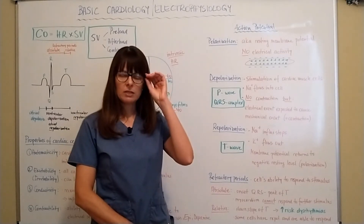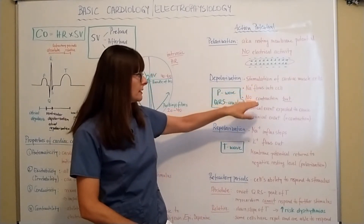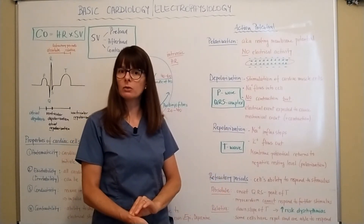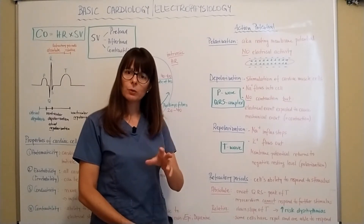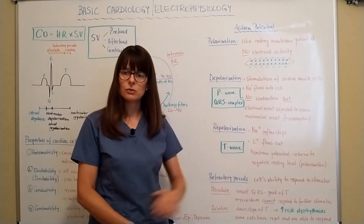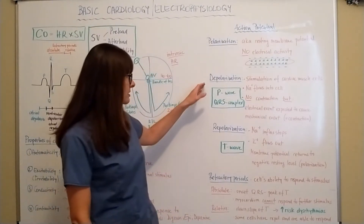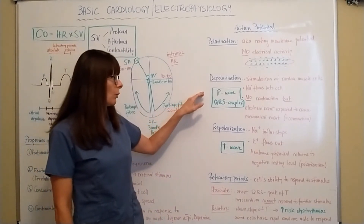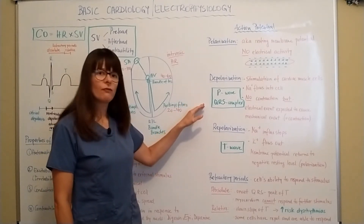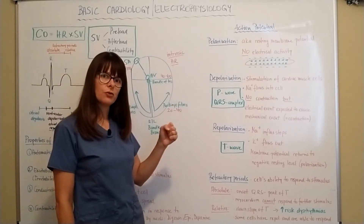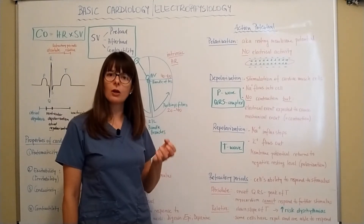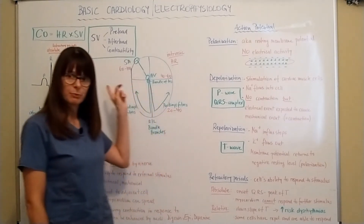This is why we learn in basic CPR class that we always have to check the patient's pulse when they become unresponsive — because on the EKG monitor we might see a waveform, the electrical activity, but because no contraction is happening, we cannot feel a pulse. In pulseless electrical activity, electricity is flowing through the heart but not stimulating the muscle cells, so there is no circulation. On an EKG, the P wave represents atrial depolarization and the QRS complex represents ventricular depolarization. The ventricles have a stronger, longer contraction because they are much bigger and produce the cardiac output.